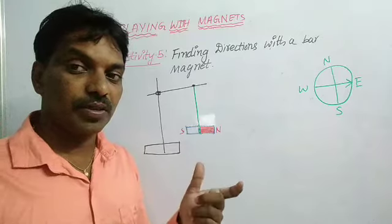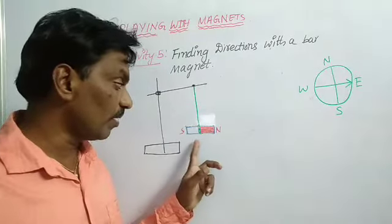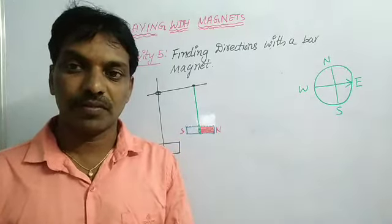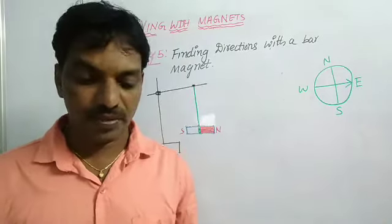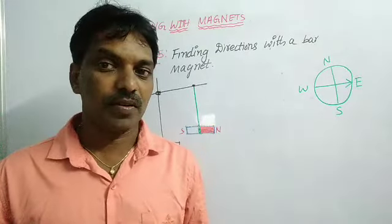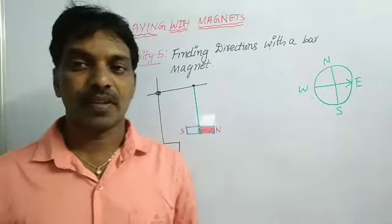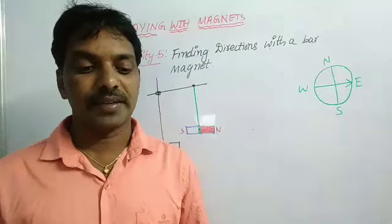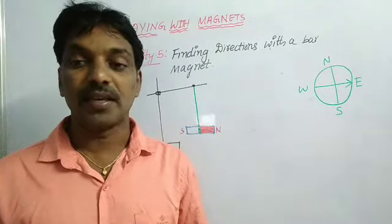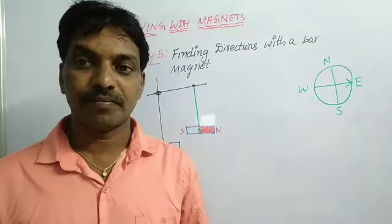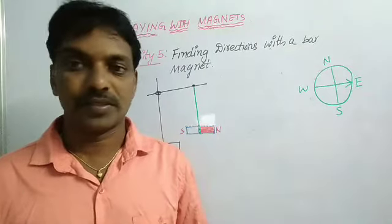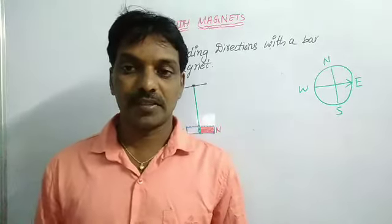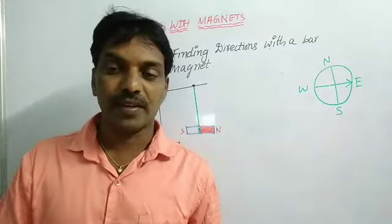In what direction does it stop? That we can find out with the north and south poles. North and south poles — we can find with the poles of the bar magnet. Will you notice the magnet finally takes a position in north-south direction? Yes, we notice that it comes to rest in the north-south direction. That is an important thing we find in this activity.